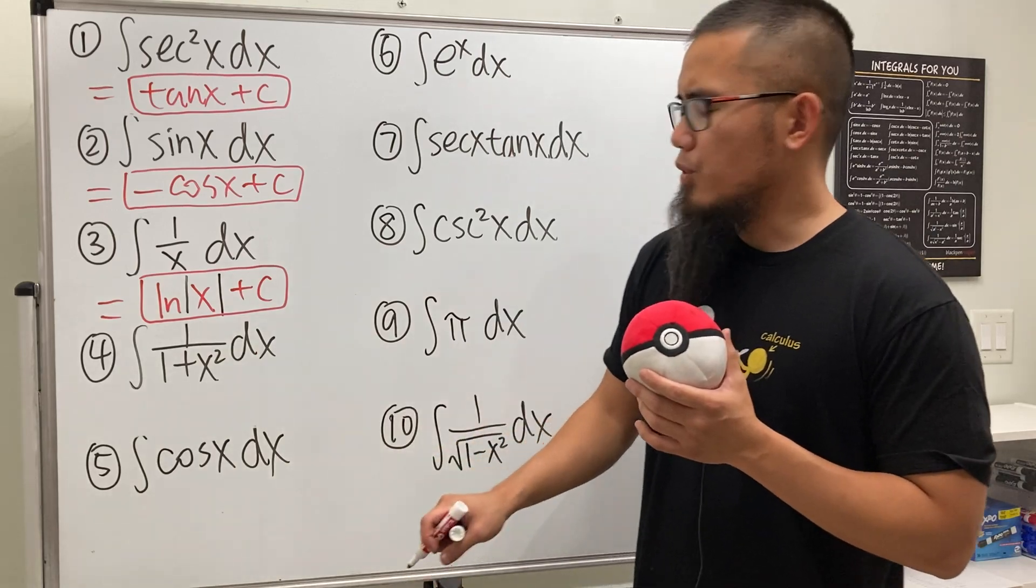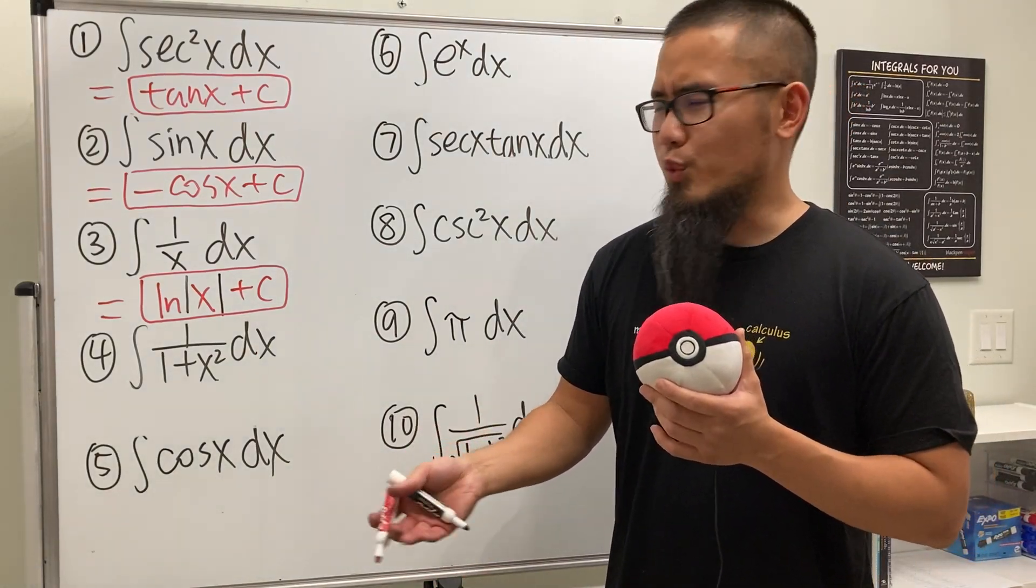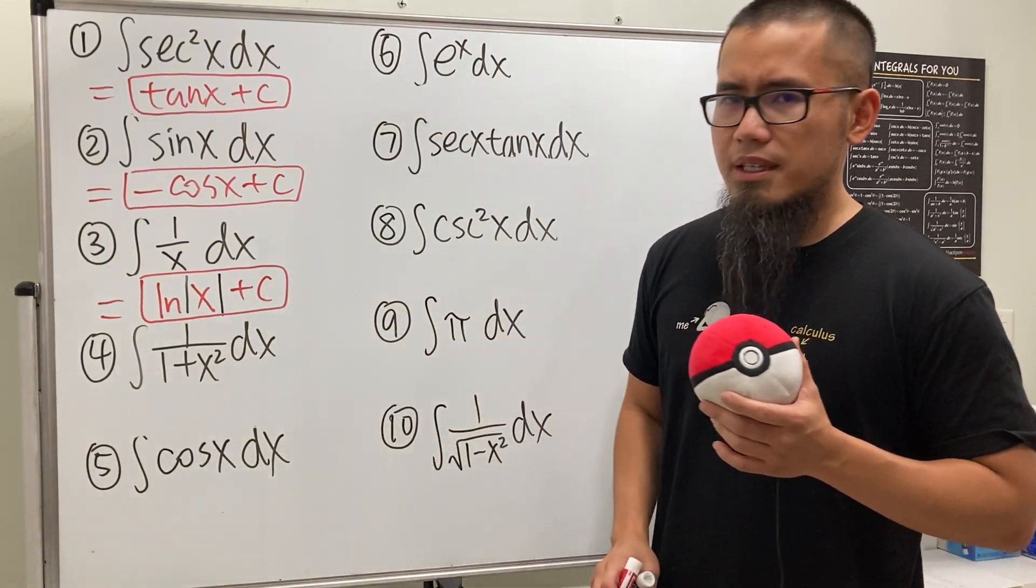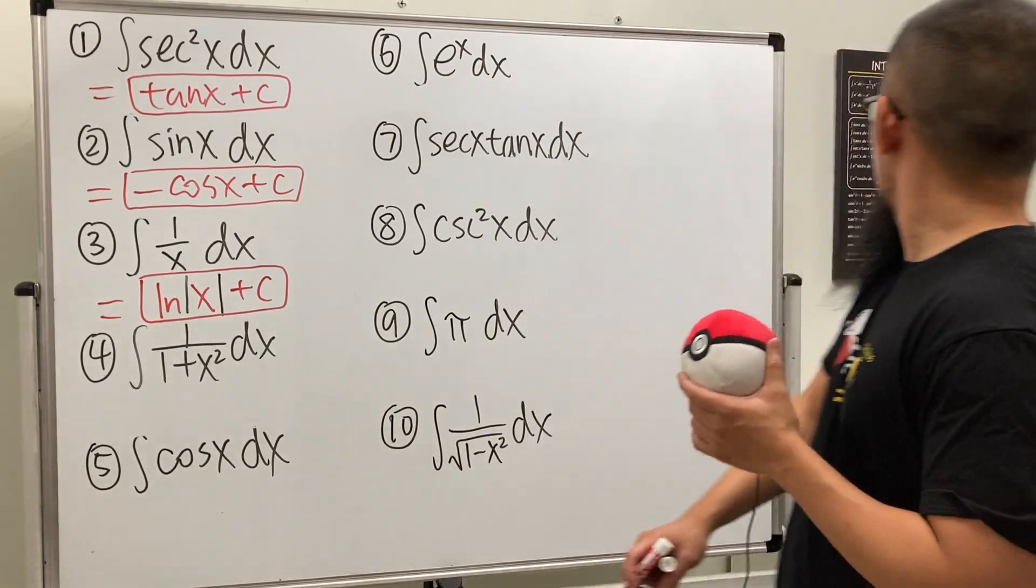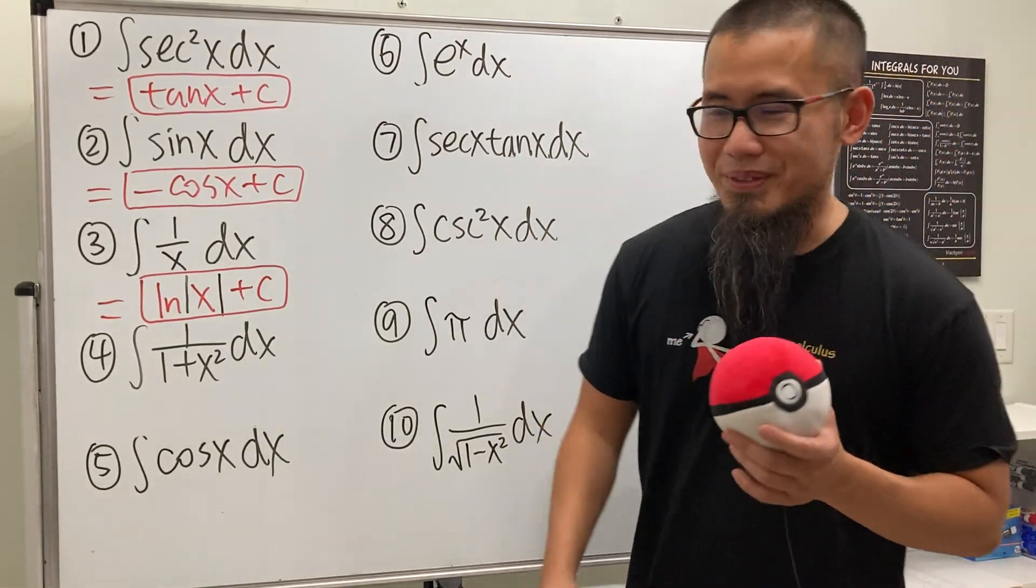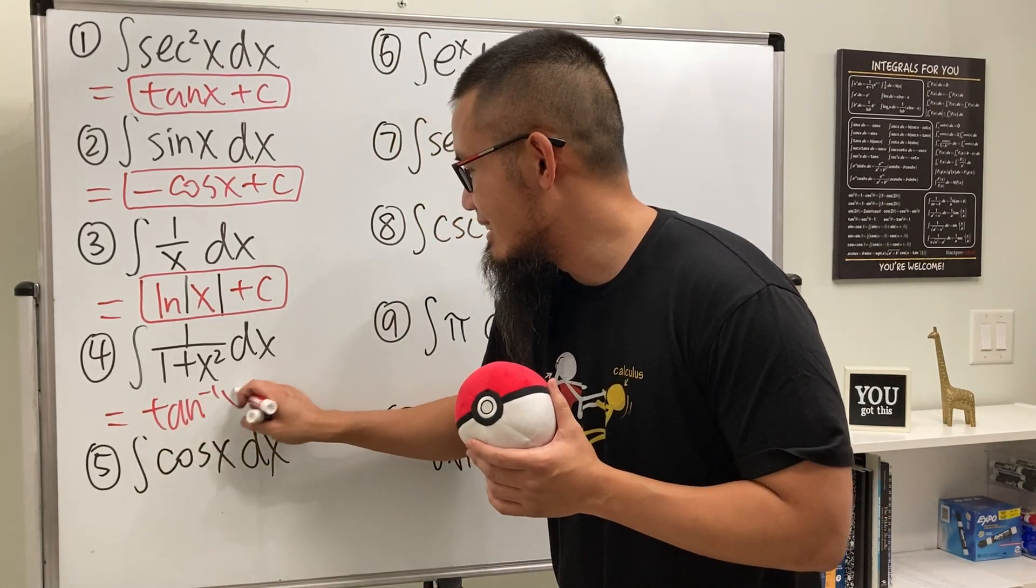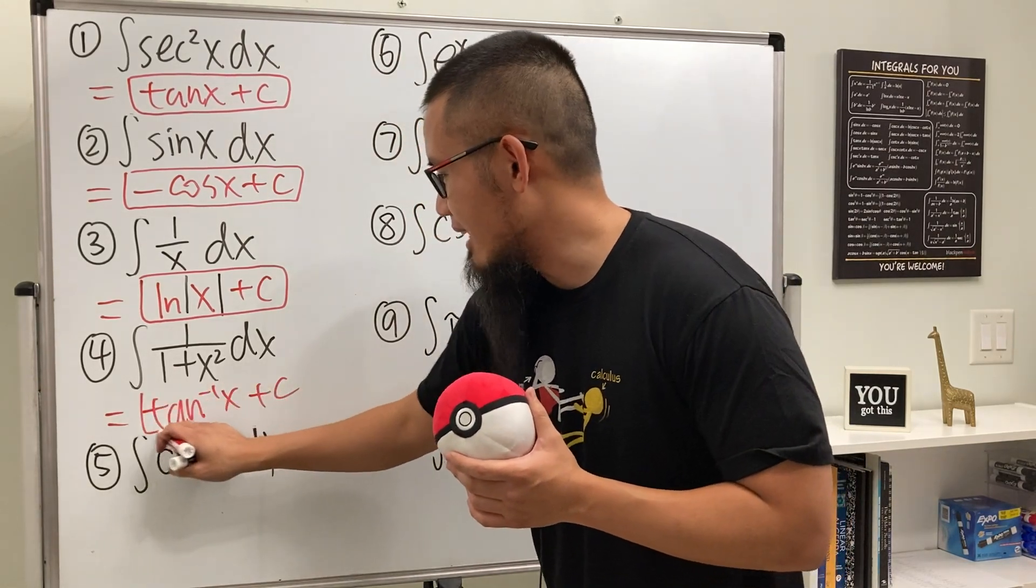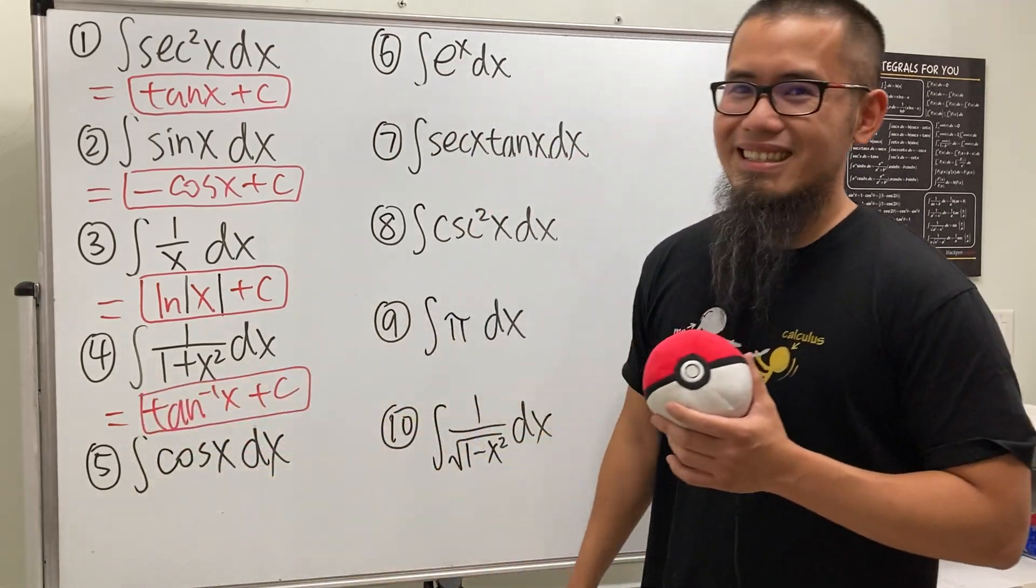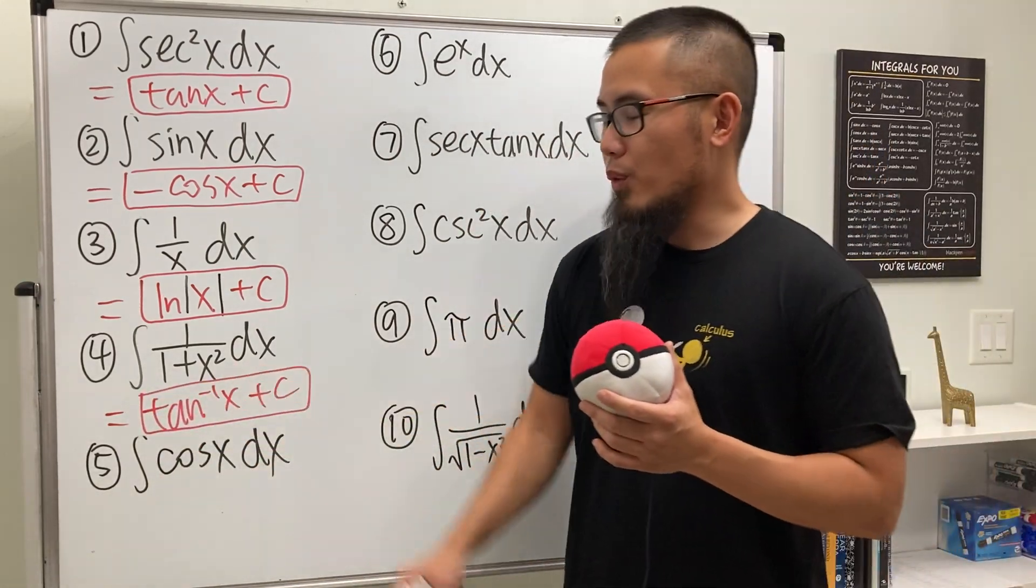Continue. Okay, do we know the derivative of what function will give us 1 over 1 plus x squared? Yes we do, inverse tangent x and then plus C. Done deal, right?